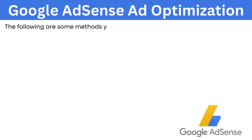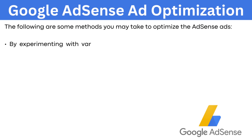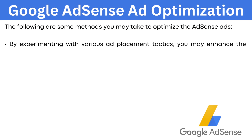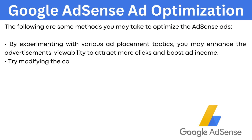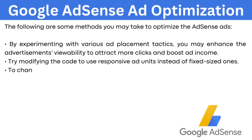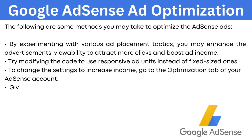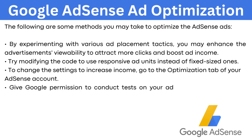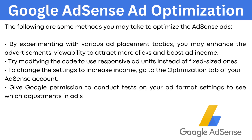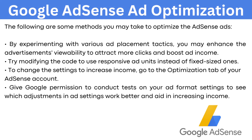Google AdSense ad optimization: by experimenting with various ad placement tactics, you may enhance the advertisement's viewability to attract more clicks and boost ad income. Try modifying the code to use responsive ad units instead of fixed-sized ones. To change the settings to increase income, go to the Optimization tab of your AdSense account. Give Google permission to conduct tests on your ad format settings to see which adjustments work better and aid in increasing income.